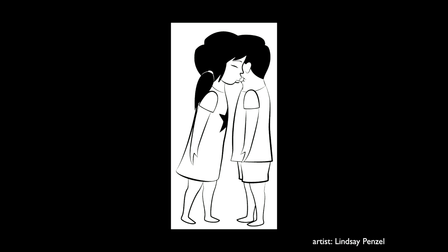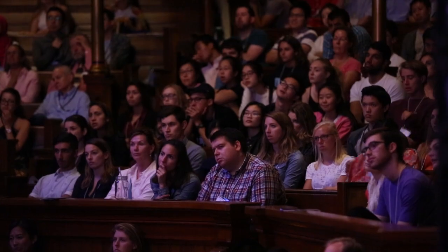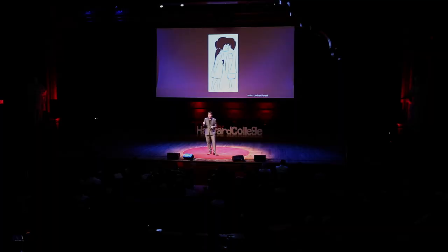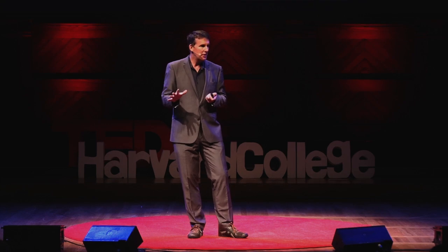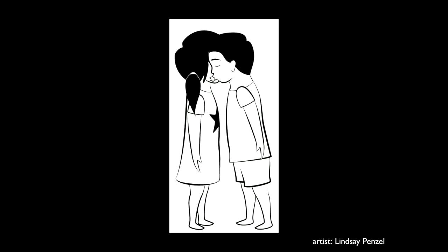Why do we get verb-medial languages like Chinese and English? Imagine I want to convey the meaning of a girl kissing a boy in a verb-final code. I say: 'girl, boy, kiss.' But remember — there's a chance for information loss in the channel. If you lose one word and only heard 'girl kiss,' can you recover the meaning? Actually, no — 'girl kiss' is consistent with either 'girl boy kiss' or 'boy girl kiss.' You just don't know how the girl is taking part in this event.